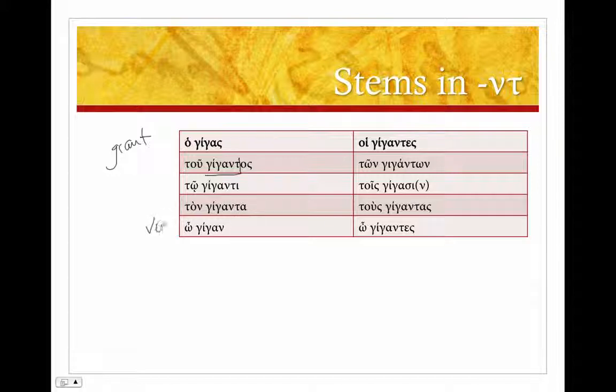Now the vocative singular, as I mentioned, is going to be a little strange. It's going to be our stem without the tau. So gigan. That's what's going on here. This is our stem.